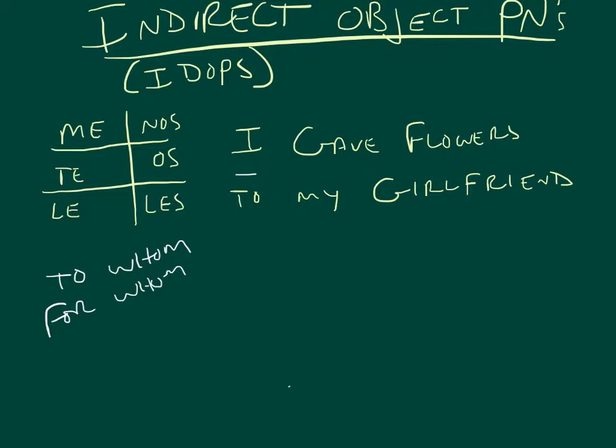And, who did he give the bill to, to Laura? Now, we're talking, that's called the indirect object noun. Now, we want to change that to an indirect object pronoun.